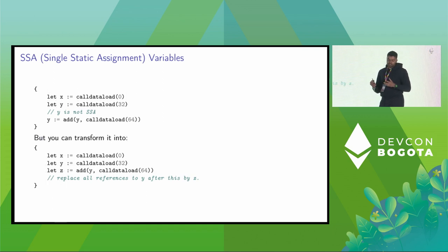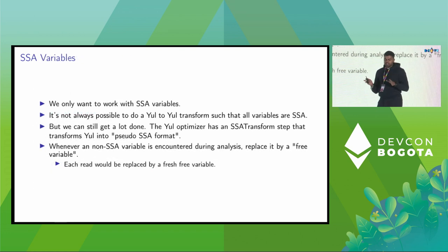This brings us to the notion of a single static assignment. These are variables that are only assigned once. Working with SSA variables simplifies our analysis quite a bit. Here is an example of a different Yule block. You have two variables, X and Y. Y gets assigned call data load 32 at the beginning and then reassigned something else. By definition, Y is not an SSA variable. It's assigned twice. But it's actually possible to transform this block into another Yule block where we introduce a new variable Z, and all these variables are actually SSA variables.